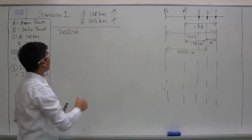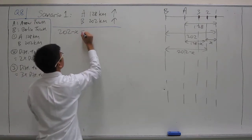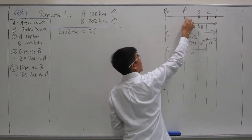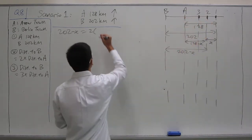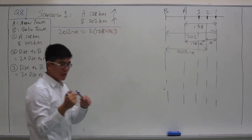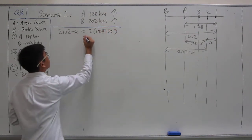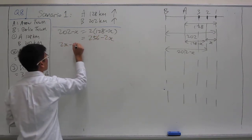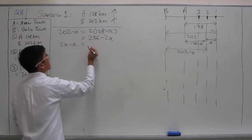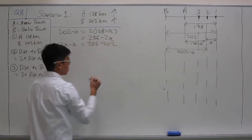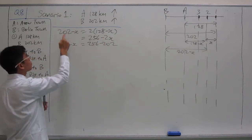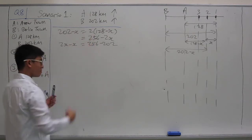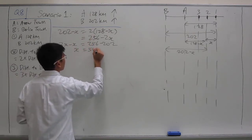Distance to B, that's 202 minus x, equals 2 times distance to A, which is 128 minus x. We have an equation in x. Expand the brackets, bring all x terms to the left side and numbers to the right side. Minus 2x becomes 2x on the right; 202 moves over. Solving further, we get x equals 54.